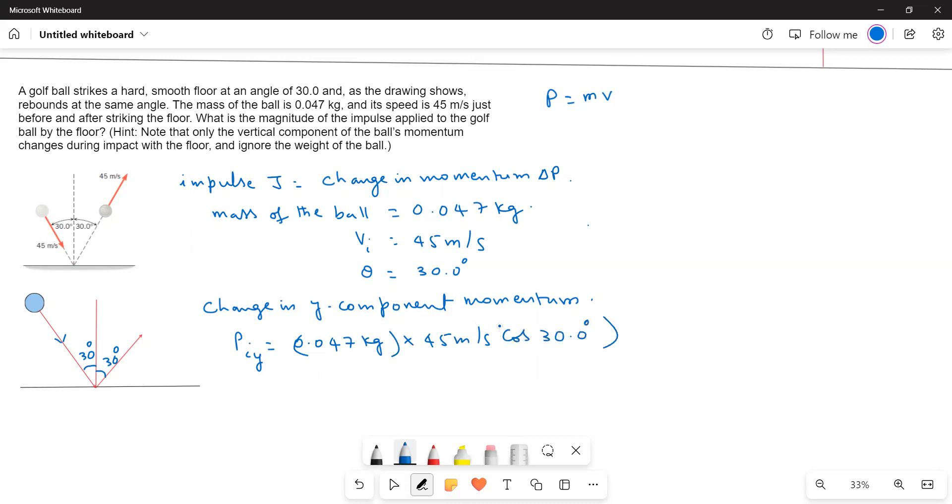Here what you have to do is it is coming down, therefore it is negative sign. And then P_final y is equal to 0.047 kilograms times 45 meters per second times cos 30 degrees.